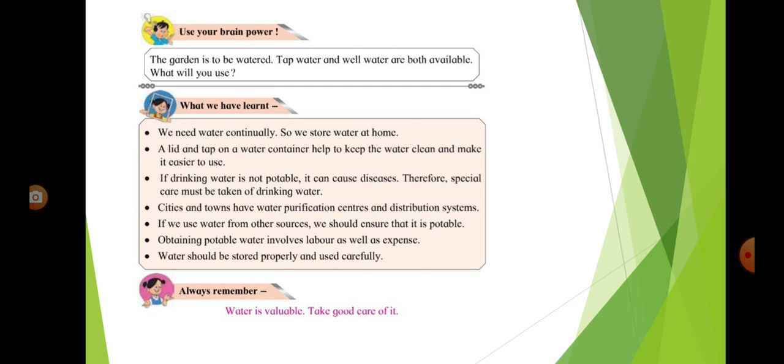What we have learnt. We need water continually, so we store water at home. A lid and tap on a water container help to keep the water clean and make it easier to use. If drinking water is not potable, it can cause diseases. Therefore, special care must be taken of drinking water. Cities and towns have water purification centres and distribution systems.